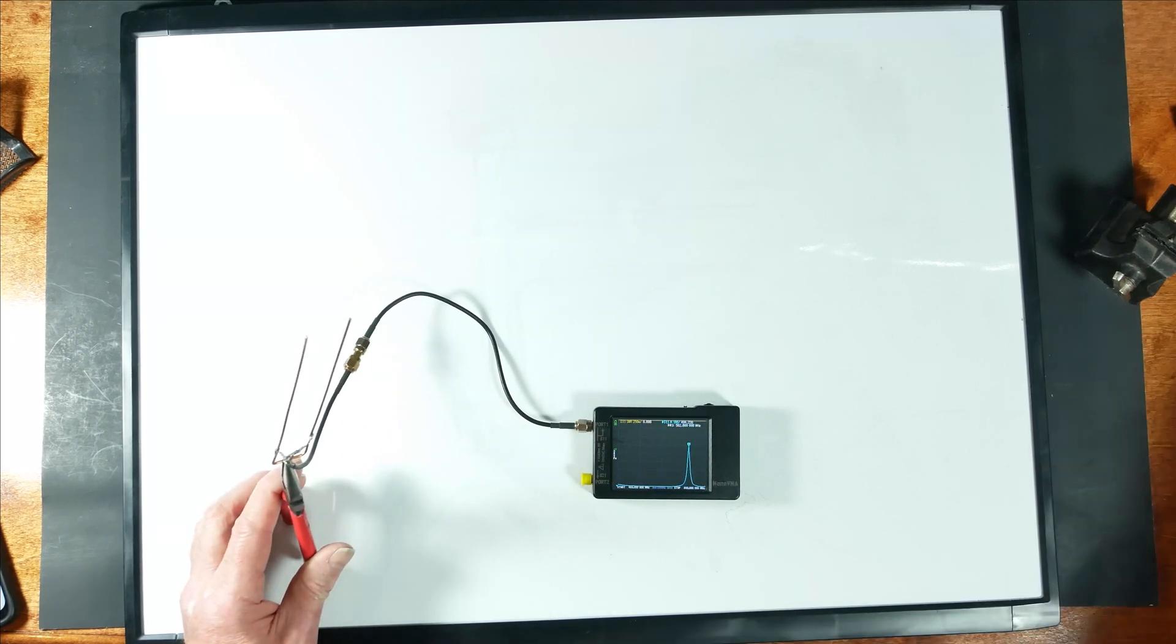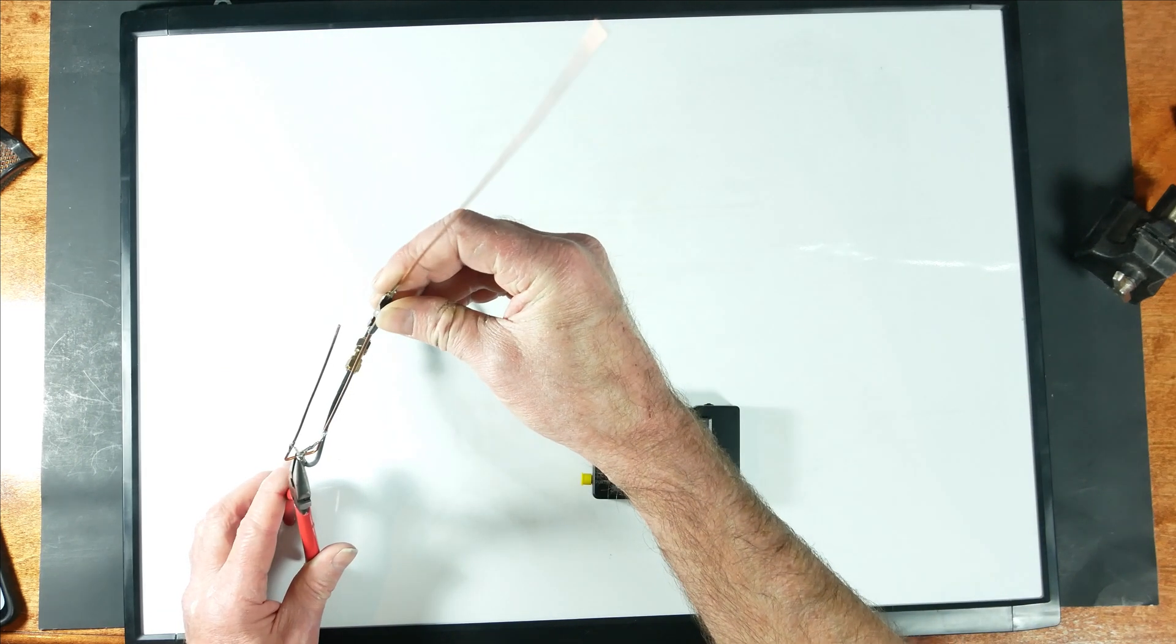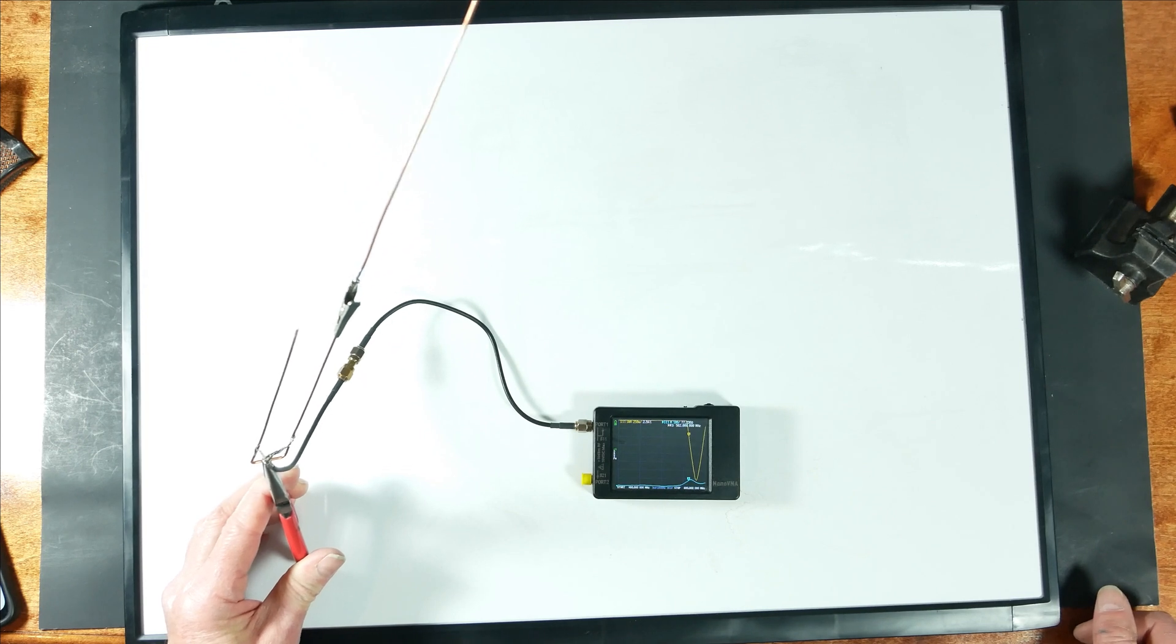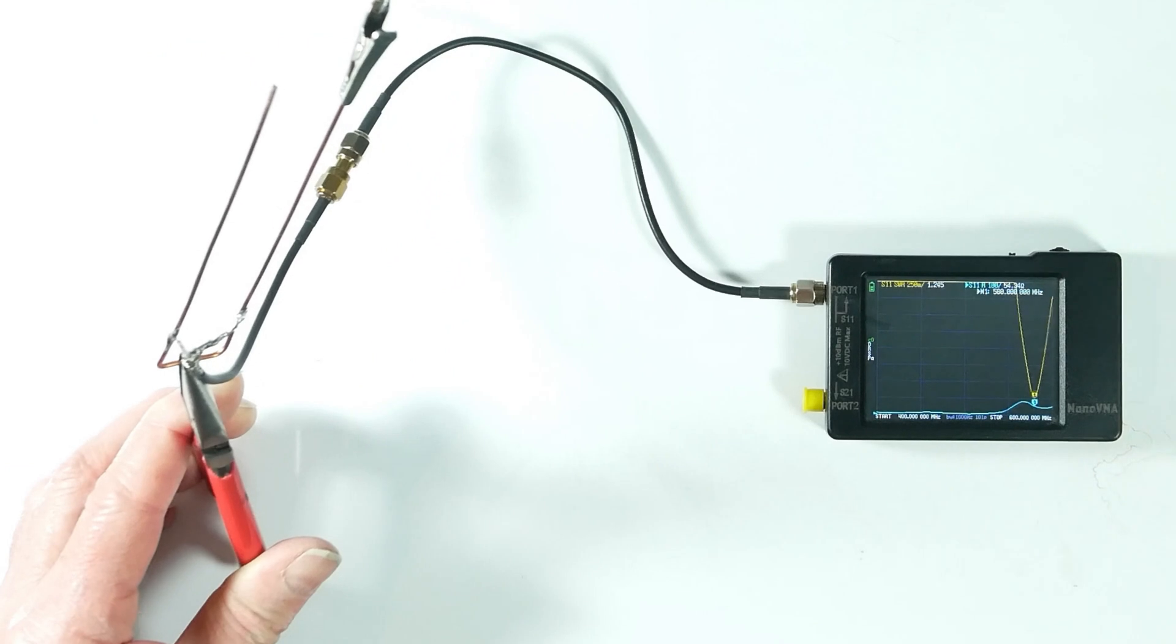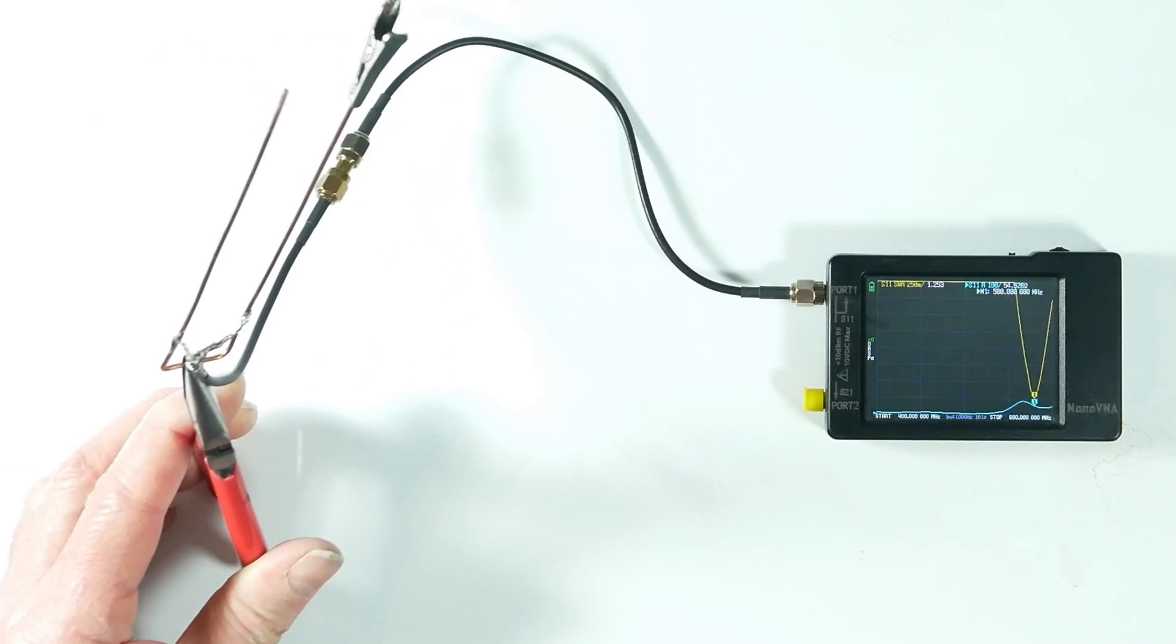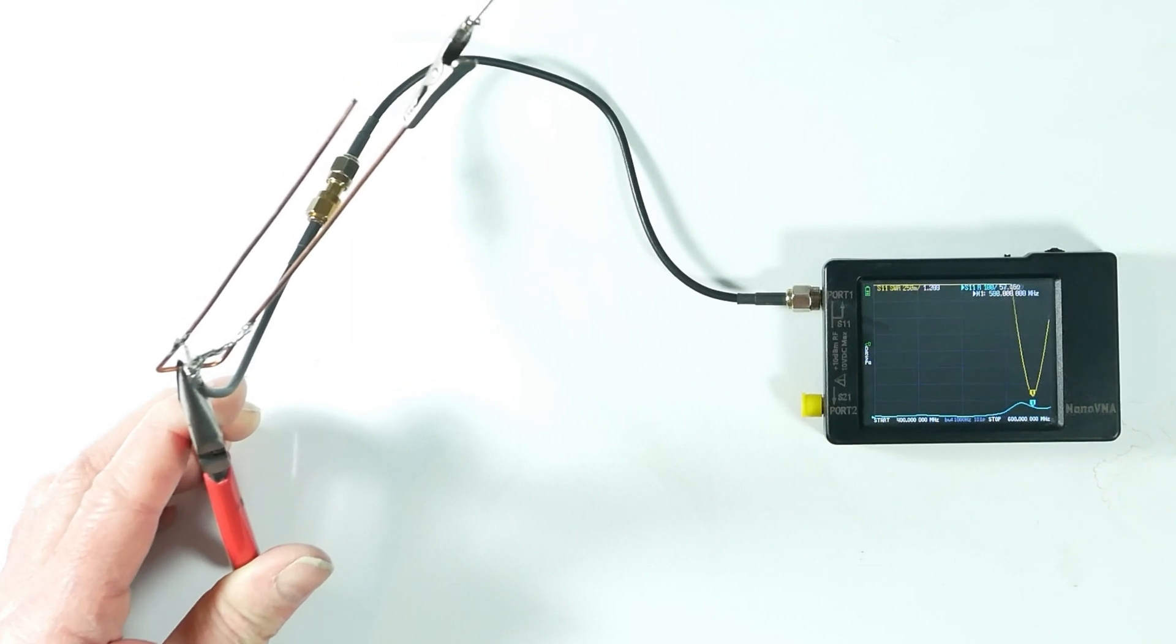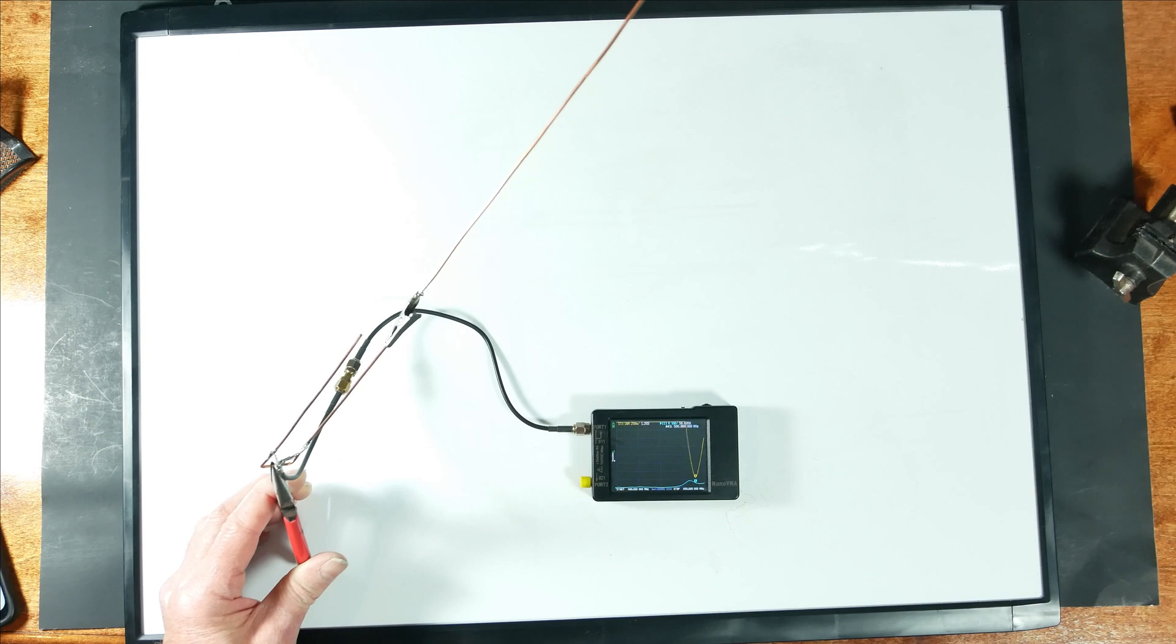And in order to turn it into an impedance transformer, all we have to do is to give it something to drive. And now all of a sudden we have an antenna at 580 MHz. This thing would radiate RF just fine. So now it's an impedance transformer.